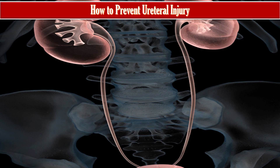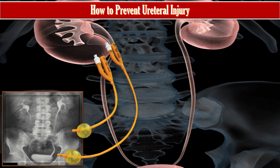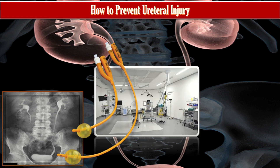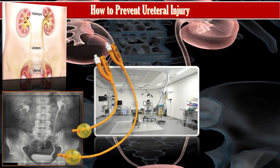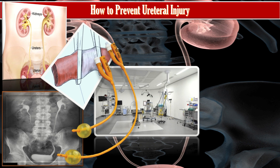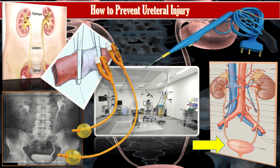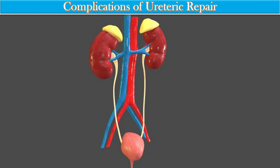How to prevent ureteric injury? Different measures include: pre-operative bladder drainage, awareness of the pelvic anatomy and IVU in distorted anatomy, appropriate operative approach with adequate exposure, avoidance of blind clamping of blood vessels, ureteric dissection with direct visualization, mobilization of the bladder away from the working field, and short diathermy application.